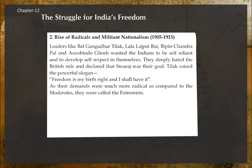Rise of radicals and militant nationalism, 1905 to 1915: Leaders like Bal Gangadhar Tilak, Lala Lajpat Rai, Bipin Chandra Pal, and Aurobindo Ghosh wanted Indians to be self-reliant and to develop self-respect. They deeply hated British rule and declared that Swaraj was their goal. Tilak raised the powerful slogan: 'Freedom is my birthright and I shall have it.' As their demands were much more radical than the moderates, they were called the extremists.